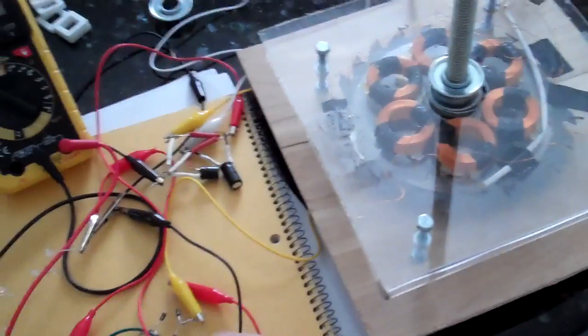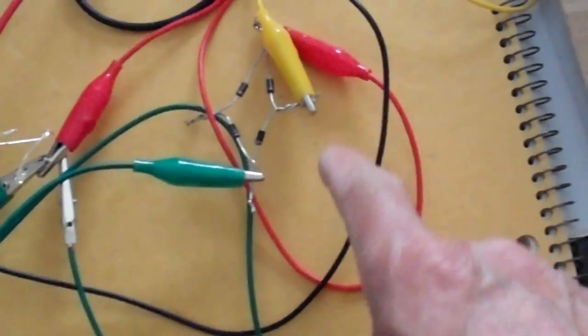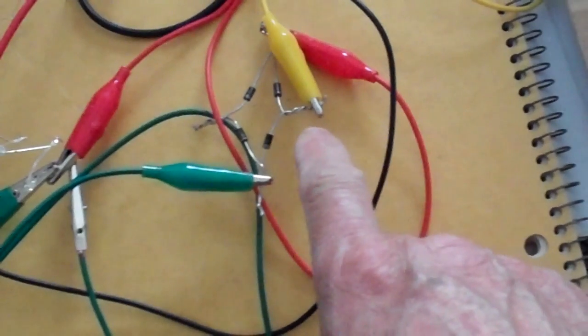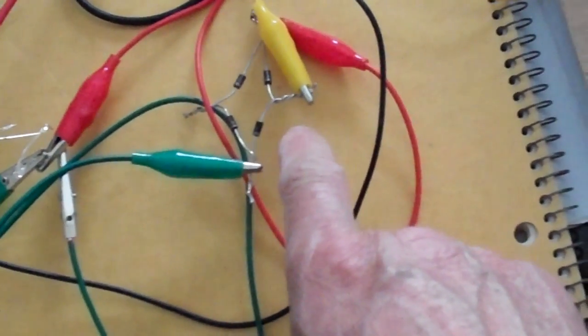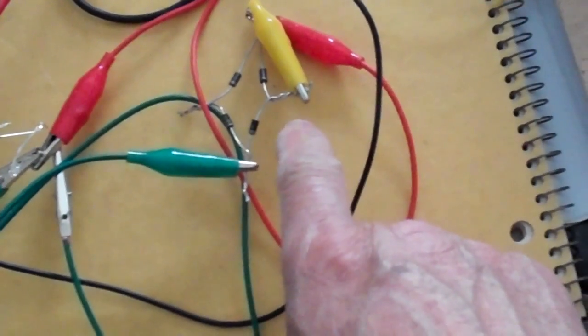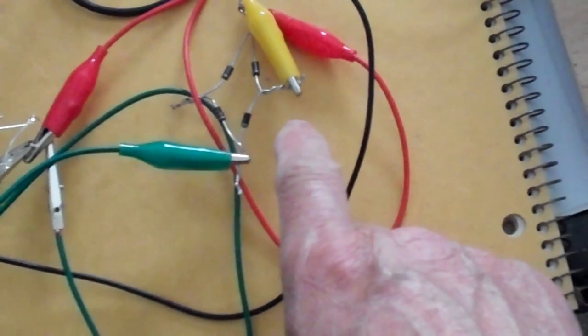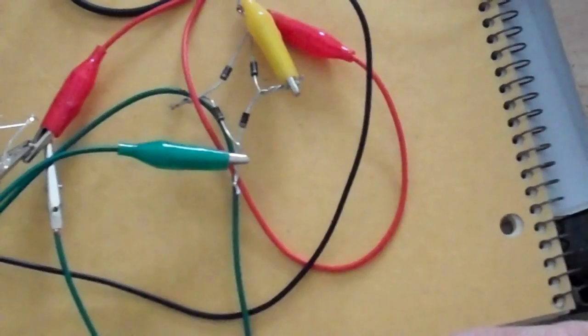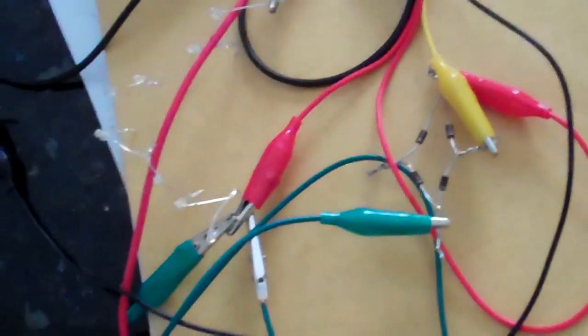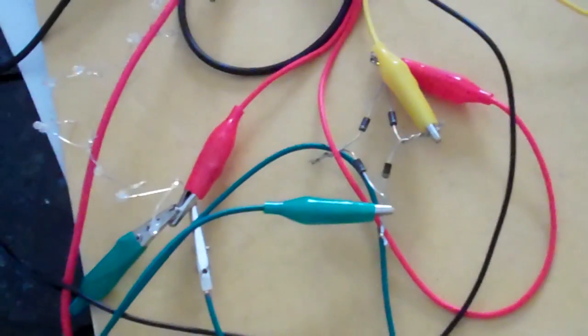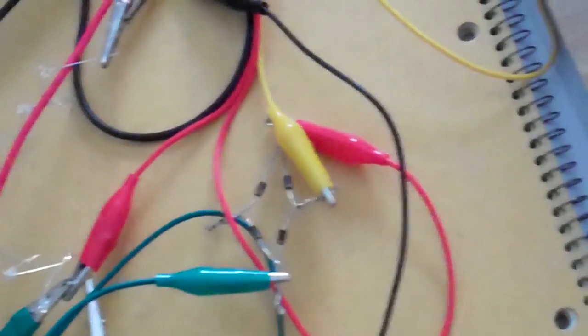This one here is another dual bridge rectifier. I think this is 1N4007 diodes I think. I won't be overpowering or burning these out anytime soon with the small output that I have.